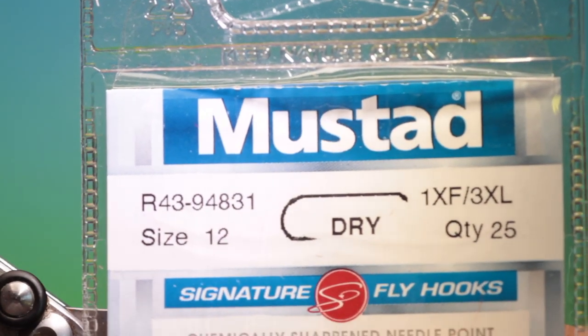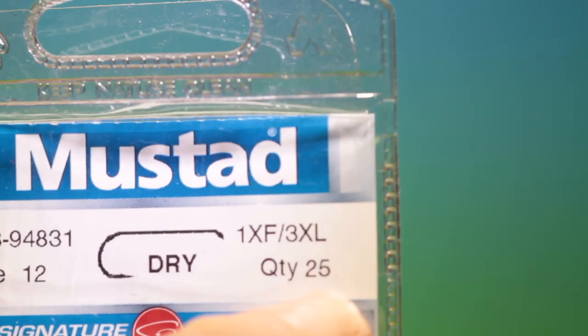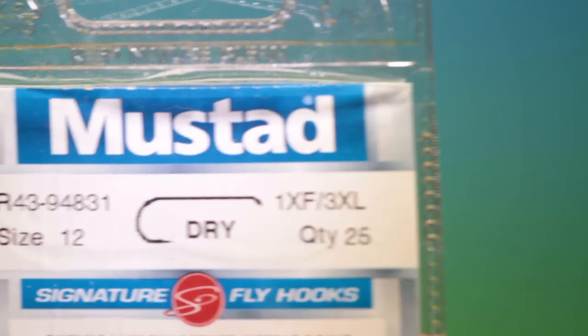We'll start with the Mustard R43 size 12, this is a three extra long dry fly hook.